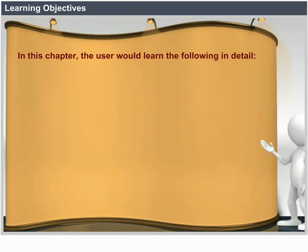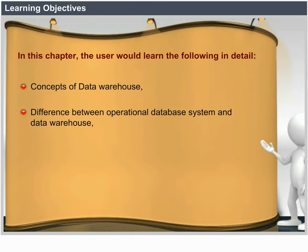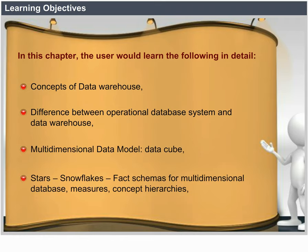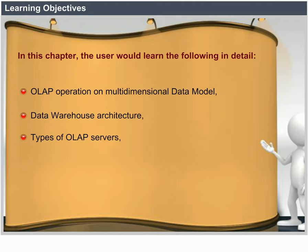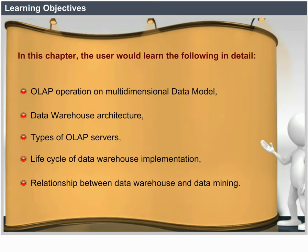Learning Objectives. In this chapter, the user will learn the following in detail: Concepts of Data Warehouse, differences between Operational Database System and Data Warehouse, Multidimensional Data Model and DataCube, Stars and Snowflake schemas for Multidimensional Database Measures, Concept Hierarchies, OLAP Operations on Multidimensional Data Model, Data Warehouse Architecture, Types of OLAP Service, Lifecycle of Data Warehouse Implementation, and the relationship between Data Warehouse and Data Mining.